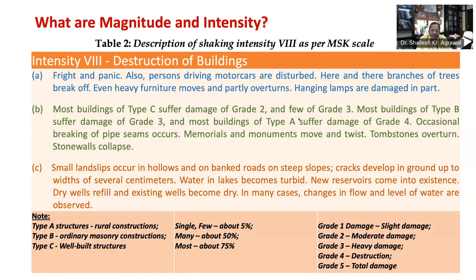Earthquake intensity is a qualitative measure of actual ground shaking at a specific location during an earthquake, and is assigned as a Roman numeral from I to XII. There are several intensity scales named after the scientists who invented them. The most commonly used are the Modified Mercalli Intensity scale, that is MMI, and the Medvedev-Sponheuer-Karnik scale, that is MSK. Both scales range from intensity 1 to intensity 12, where intensity 1 is least perceptible and intensity 12 is most severe.